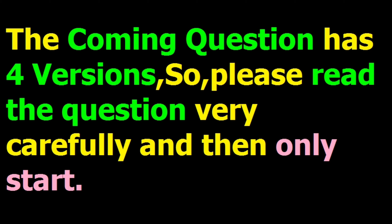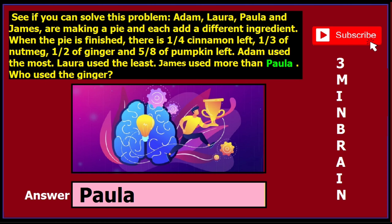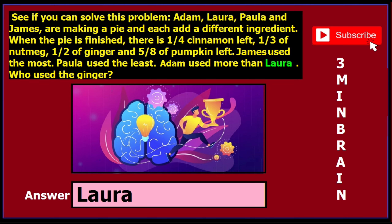The coming question has got 4 versions. So please read the question very carefully, because each version differs from each other in question only — not in image or options, only in question. For instance, in version 1, just read the second last sentence and the last word of that sentence — that's your answer. For example, Paula is written as the last word of the second last sentence, so the answer is Paula. In version 2 of this question, the last word of the second last sentence is Laura, so the answer is Laura.